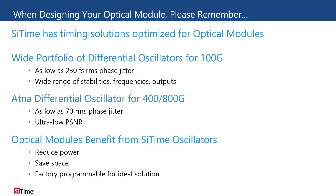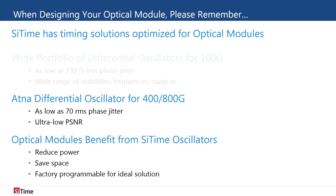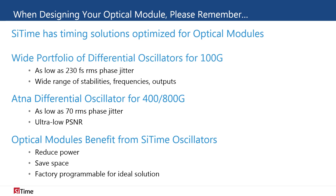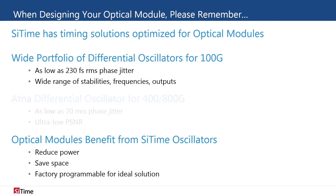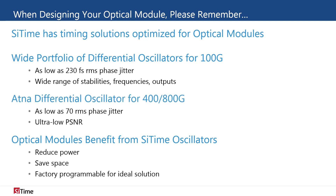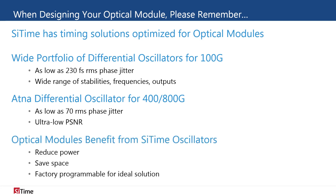When designing your optical module, please remember SciTime's wide portfolio of differential oscillators. For 100 Gb modules, SciTime differential oscillators deliver RMS phase jitter as low as 230 femtoseconds and are available in a wide range of stabilities, frequencies, and output types. For 400 and 800 Gb modules, the Atena family provides 70 femtosecond jitter and ultra-low PSNR. Overall, designing with SciTime oscillators reduces power, saves space, and allows engineers to customize their ideal timing solution.